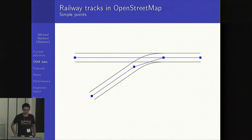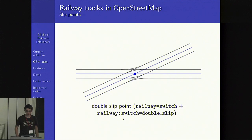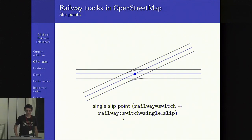Simple points are mapped like this. The OpenStreetMap data is shown in blue in this image and the rails are shown in black. You have just two ways connected with a common node. It becomes a bit difficult if it's a slip point — for example this double slip point where you can turn from this track to this track or just continue straight on. Then you need to add an additional tag: railway:switch=double_slip. For single slip points there's a different tag, and I recommend adding a turn restriction to indicate which turns are possible, because in this example it is not possible for a train to change direction coming from here because there's no switch plate for the curve.